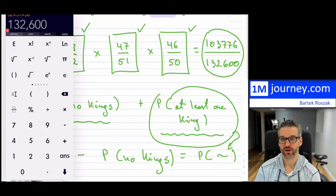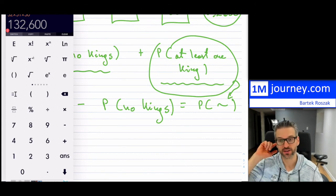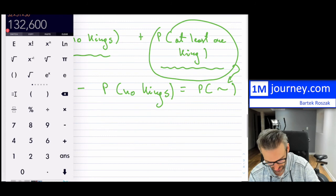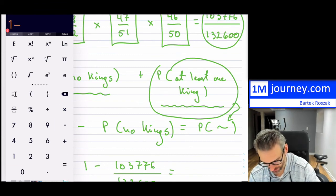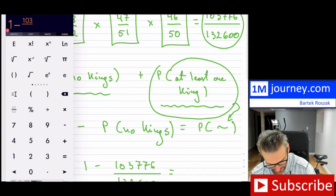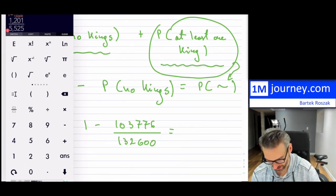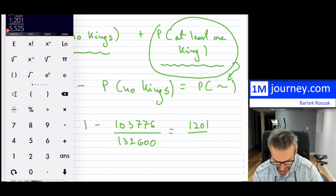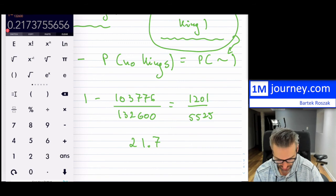You can also do this with combinations, but this approach is relatively simple. So if you want the probability of drawing at least one king, you do 1 minus 103,776 over 132,600. You can keep it as a reduced fraction or convert to a decimal. As a decimal, this is approximately 21.7%. So that's the probability of actually drawing at least one king, which is probably higher than people think.